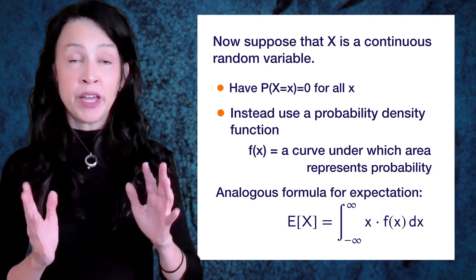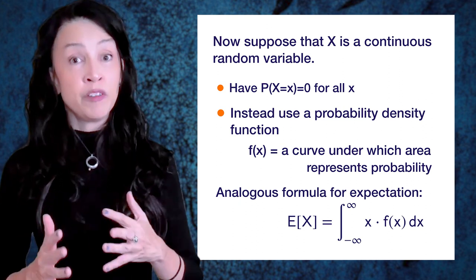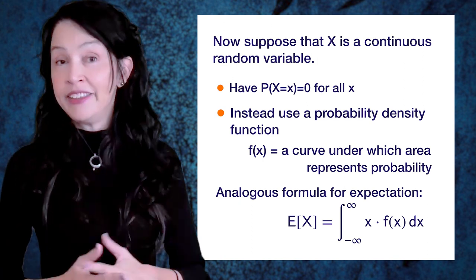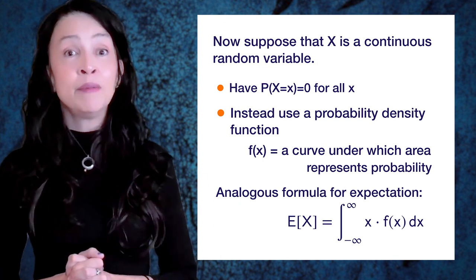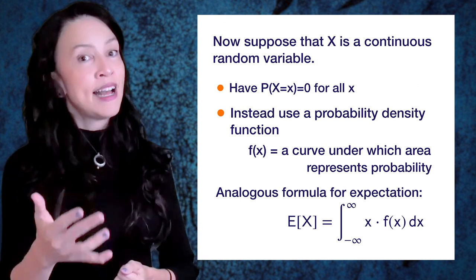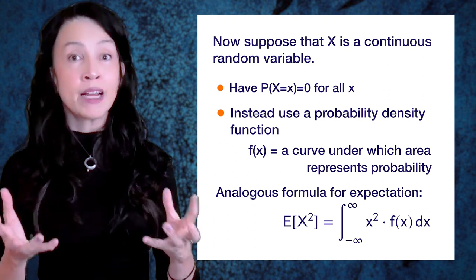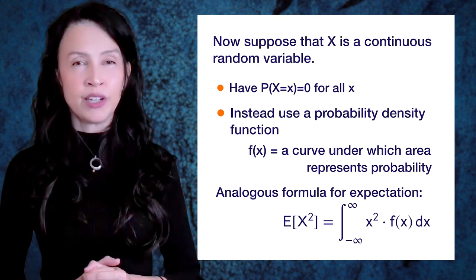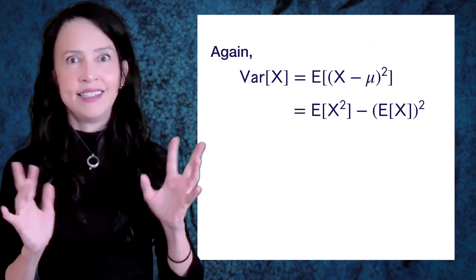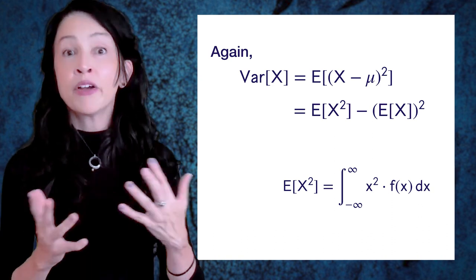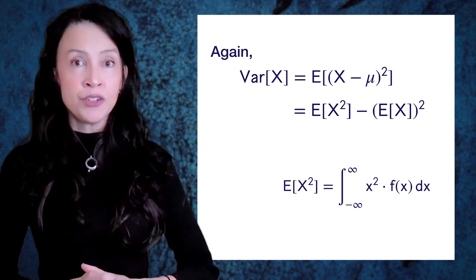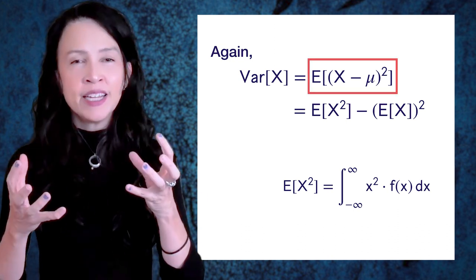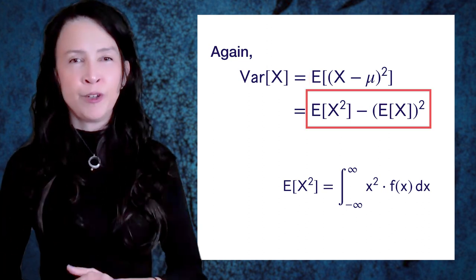For computing the variance - and by the way the variance is defined in exactly the same way it was before, as an expectation or a difference of expectations - that's exactly the same. It's just that computing those expectations is a little different. The analogous formula for computing the expected value of X squared is going to be the integral of lowercase x squared times the probability density function. We can compute variance by squaring out X minus mu, running the expectation through, and doing these two individual expectations rather than the big expectation with mu and the squared.